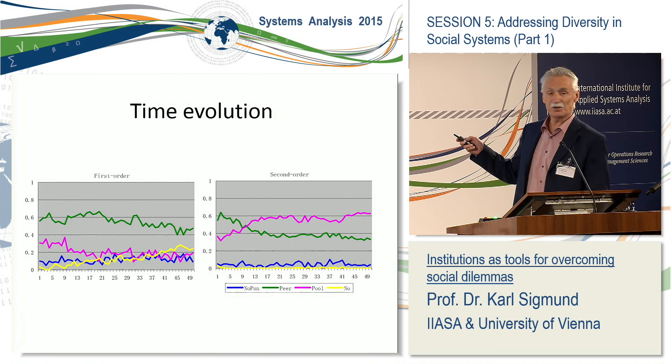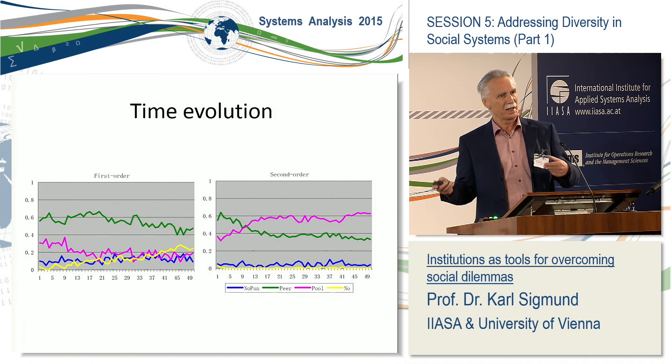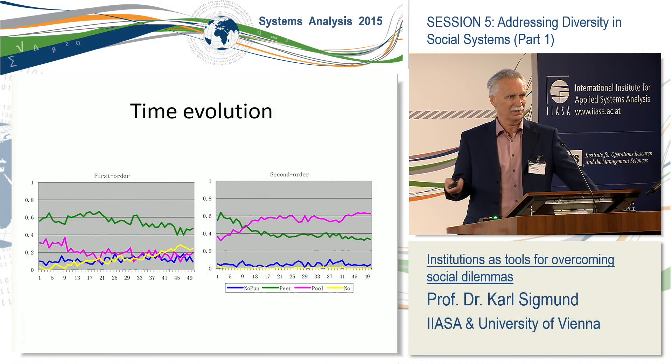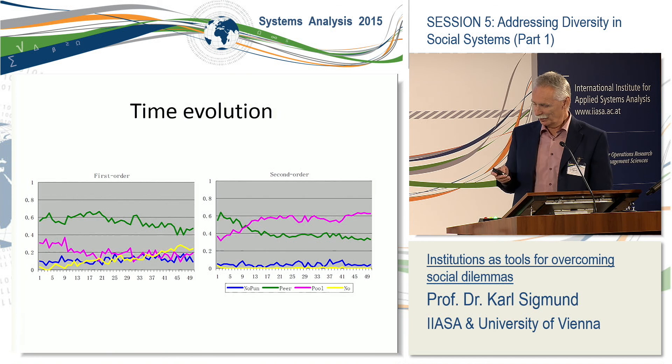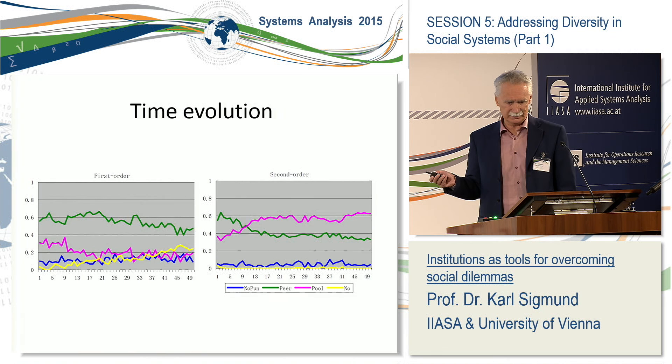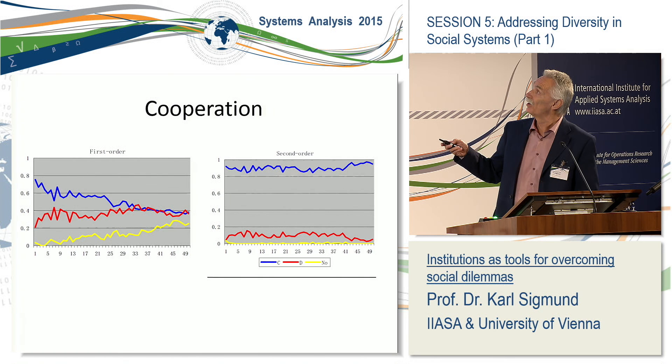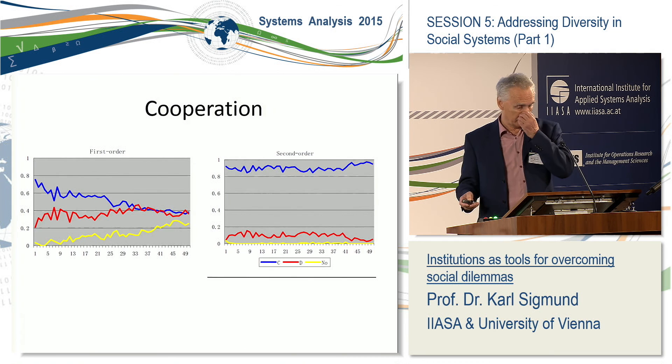Peer punishment holds its own and is not eliminated, because it makes sense: if everyone is contributing to the common pool, why should you pay for the police? In that case, peer punishment is a lot more efficient. Looking at cooperation levels, in the first-order group cooperation declines very much, while in the second-order group cooperation is very stable.